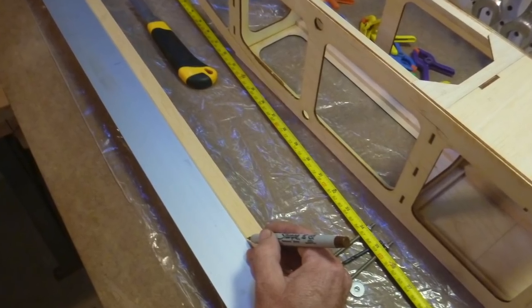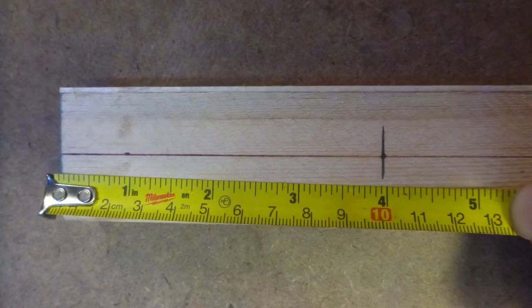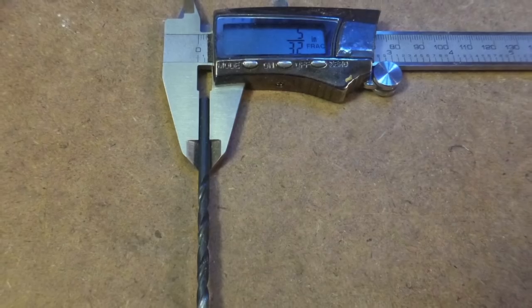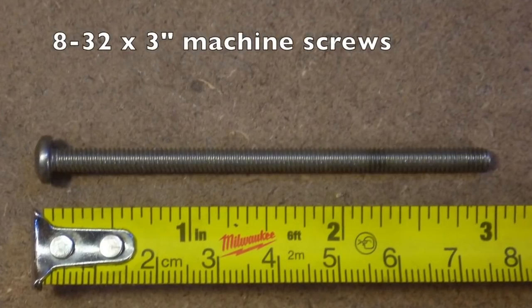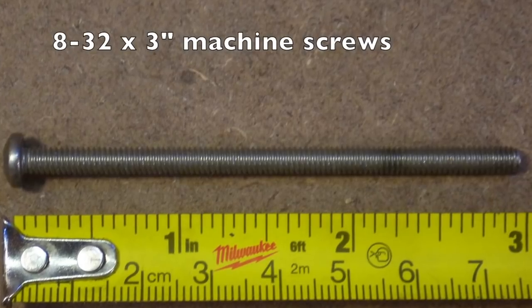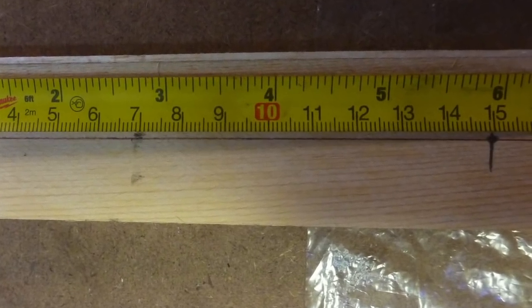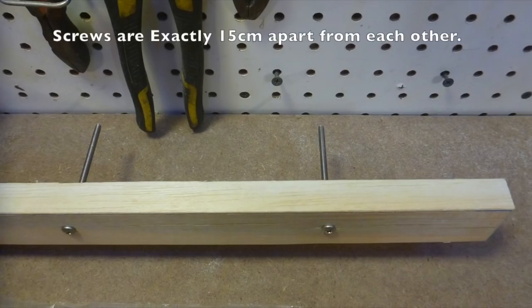Next, we marked a center line down the exact middle of the strip. About four inches from the end, we drilled a hole directly on center with a 5 32nds drill bit, and inserted an 8 32 by 3 inch machine screw tightly in the hole. We drilled another hole exactly 15 centimeters back from the first one, and put in a second machine screw.